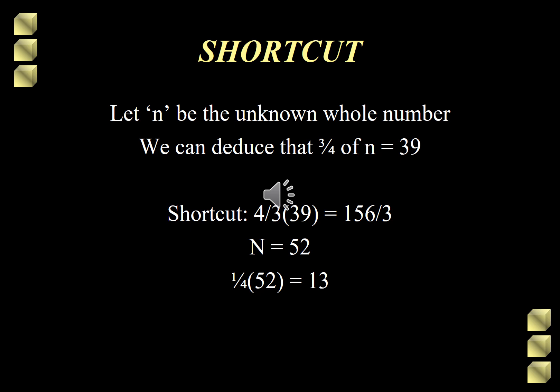Getting the reciprocal of 3 over 4, that gives us 4 over 3. 4 over 3 times 39 is simply equal to 156 over 3. And that gives us 52. So 52 is the bigger number. And one-fourth of 52 is equal to 13.